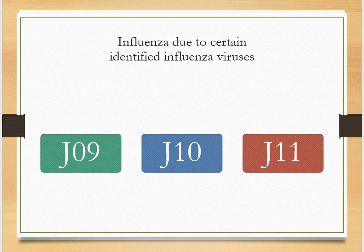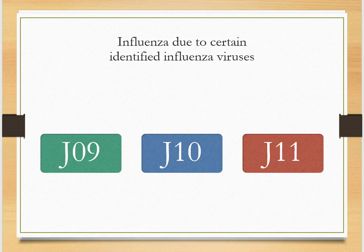Next up: influenza due to certain identified influenza viruses. Here we're going to see an exception to guidelines. With these types of conditions, we can only code confirmed cases of influenza — this is related to category J-10 and category J-09. This is an exception to our hospital inpatient guidelines. Of note, guidelines tell us that confirmation doesn't necessarily have to be a positive laboratory test finding; the provider, based on clinical judgment, can state that the patient actually has influenza. If the provider says suspected, possible, probable, or 'I think it is,' we should assign J-11.